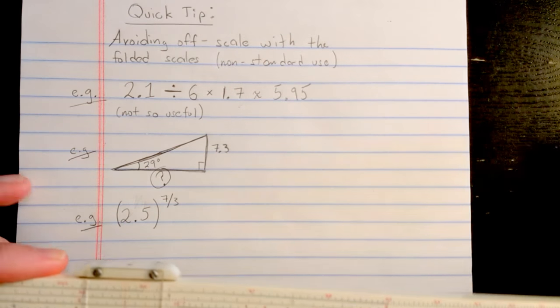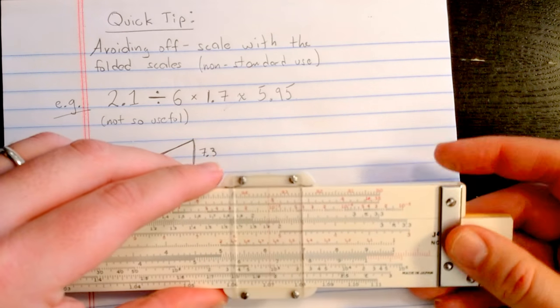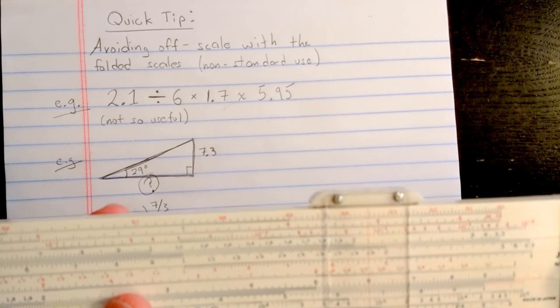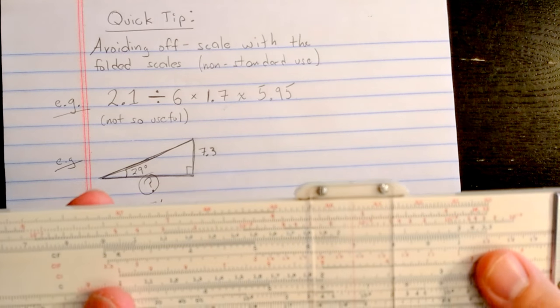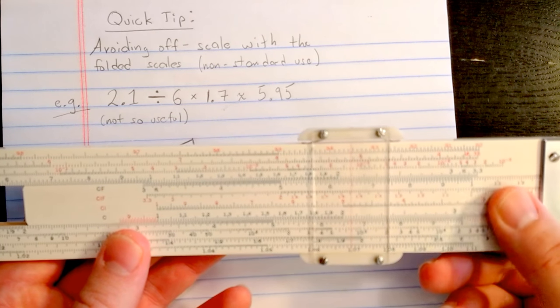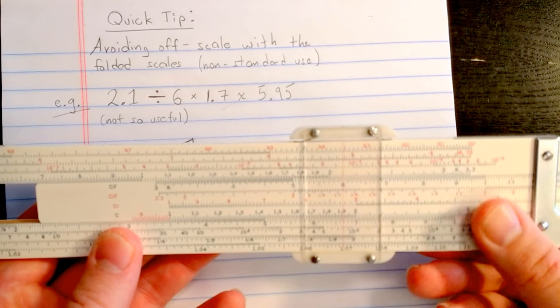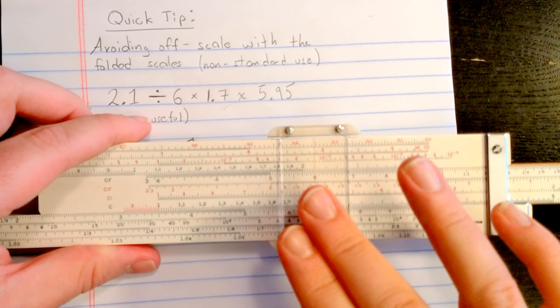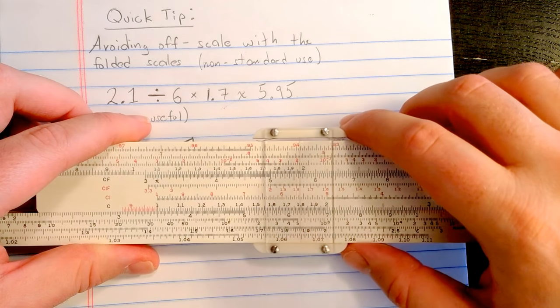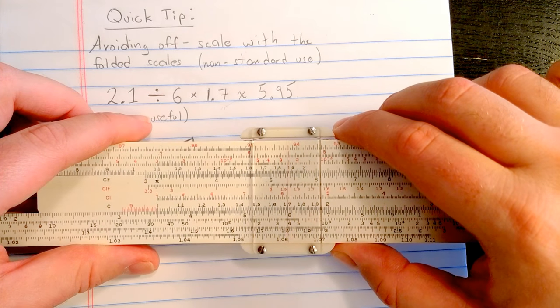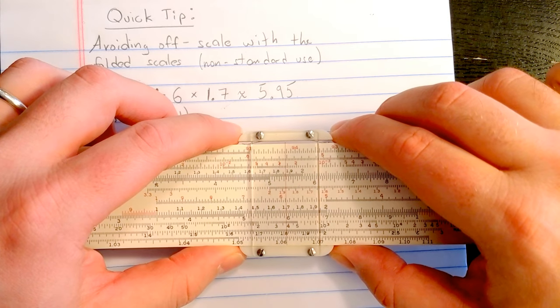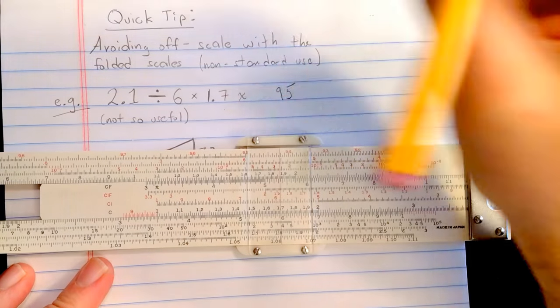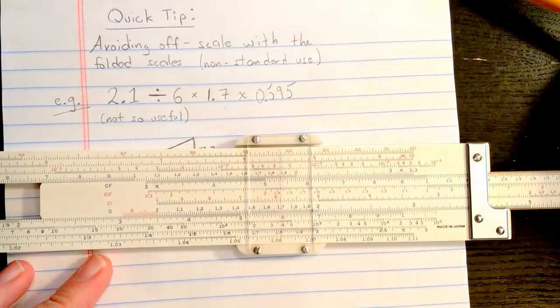Now, that's not the normal way you would use the scales. I think normally maybe you would take 2.1 here on DF, then to divide by 6 you're going to bring the 6 there on CF. And then you would see that the 1.7 is off scale. But you would find the 1.7 on the C scale and read result on D. Again, the correct order of magnitude there is 0.595.